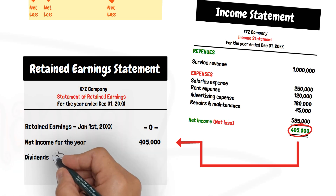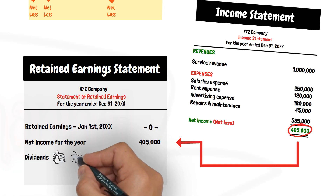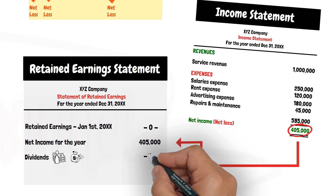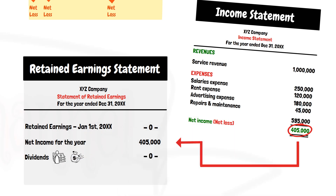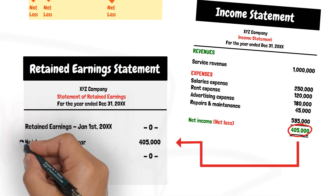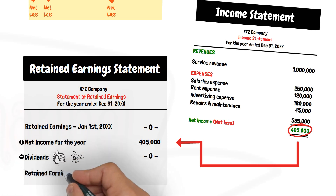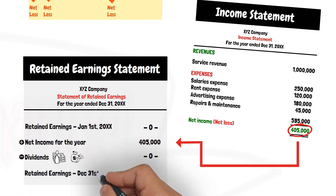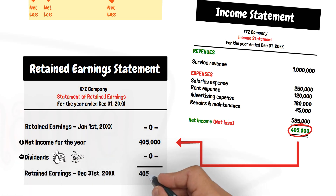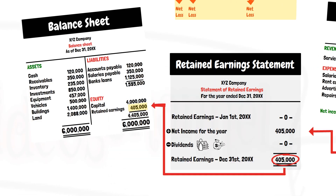The dividends line item shows the profit distributions declared to the owners of the business during the current period. By adding the beginning balance to the income for the current year, less the dividends, we get the ending balance of the retained earnings, which is reflected in the equity section of the balance sheet.